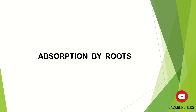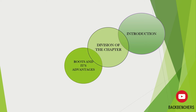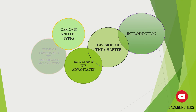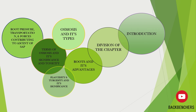I have divided this chapter into seven parts. The first is an introduction, which is today's class. Second is roots and its advantages. Third is osmosis and its types. Fourth is terms of osmosis, its significance, and tonicity. Fifth is flaccidity and turgidity and their significance. Sixth is root pressure, transportation, and forces contributing to the ascent of sap. The seventh and last class is about experiments.